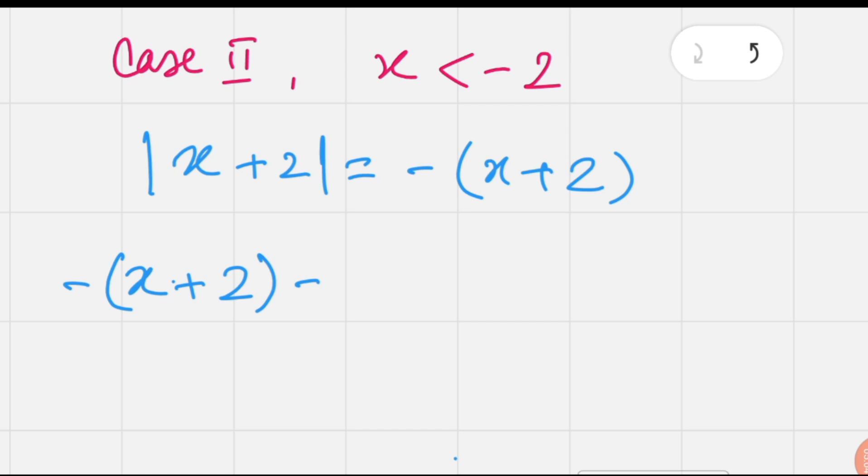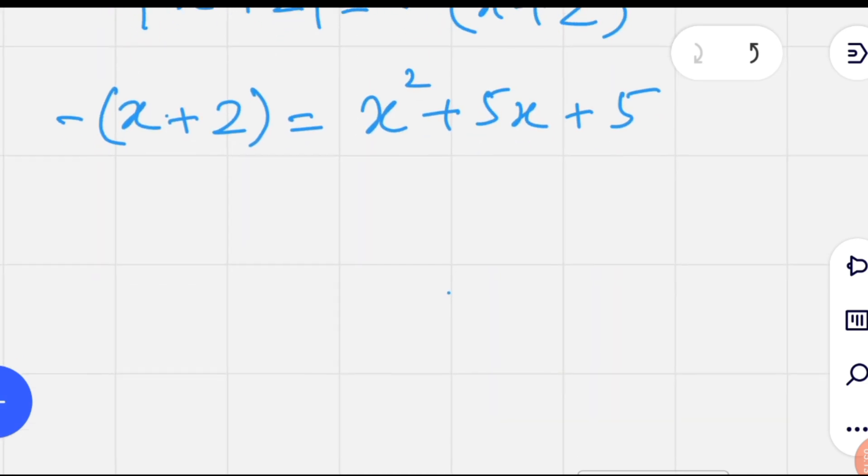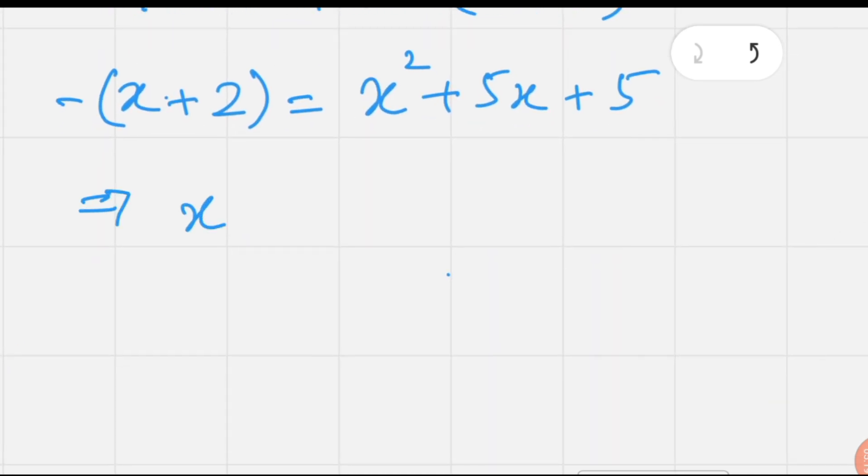Putting this in the equation: -(x + 2) = x² + 5x + 5. Adding x + 2 to both sides, the new equation is x² + 6x + 7 = 0.